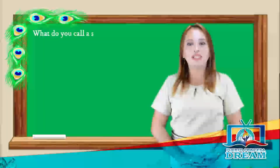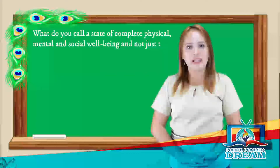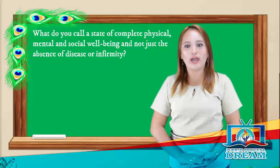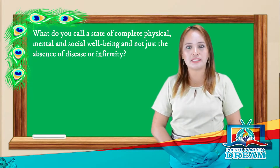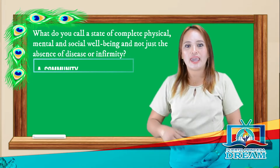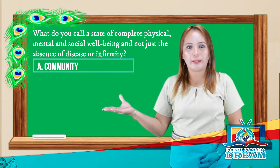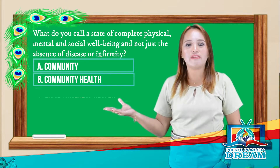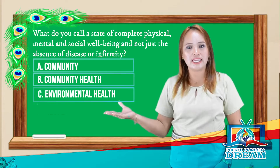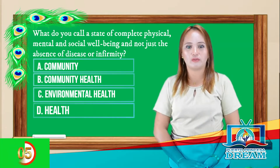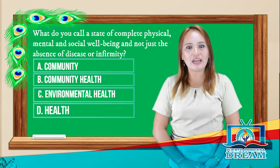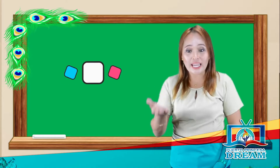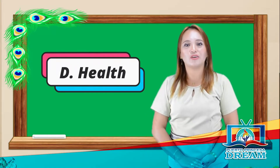What do you call a state of complete physical, mental, and social well-being, and not just the absence of disease or infirmity? A. Community, B. Community health, C. Environmental health, D. Health. Time is up! If your answer is D, you get the correct answer.